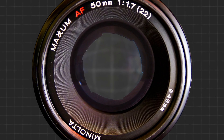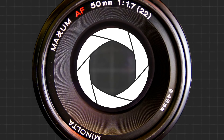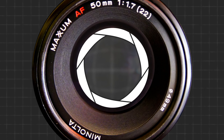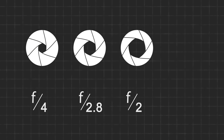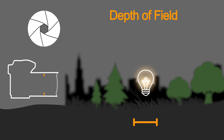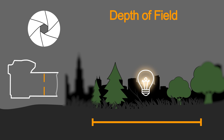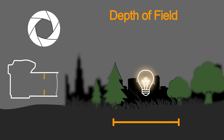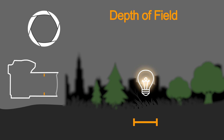In the lens is a spherical array of blades that control the aperture's diameter. The smaller the number, the larger the aperture. And the aperture itself directly affects the depth of field. The smaller the aperture, the wider the depth of field, meaning a larger part of the image is in focus. The other way around, at maximum aperture, the depth of field is extremely shallow.